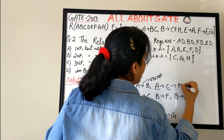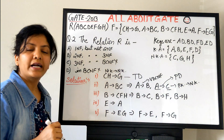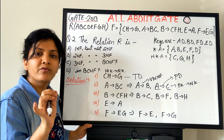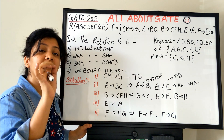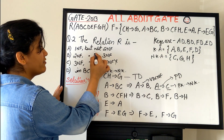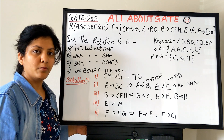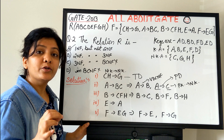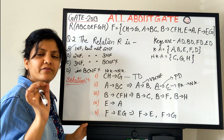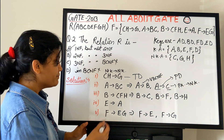A→C: A is part of a key (not the full key) determining C, a non-key attribute — this is a partial dependency. The moment you find the very first partial dependency, you declare the relation is in first normal form but not in second normal form. So the answer is: the relation R is in 1NF.